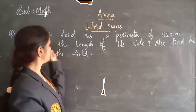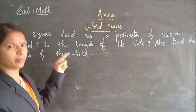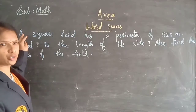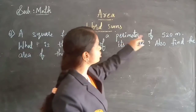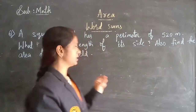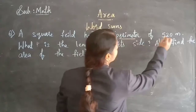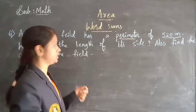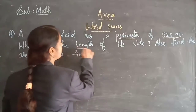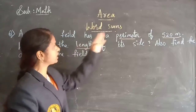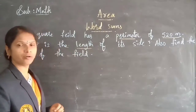Let's see the question here — it is a perimeter and area related problem. A square field has a perimeter of 520 meters. Perimeter is given as 520 meters. What is the length of its side? We need to find its length using the given perimeter. Also, find the area of the field.